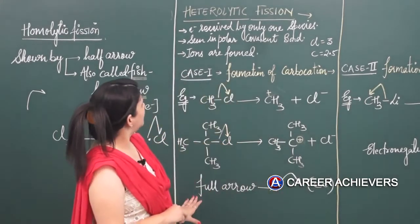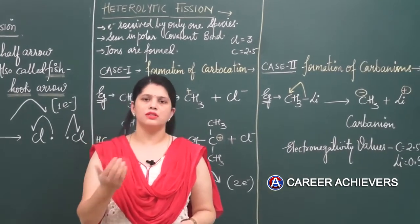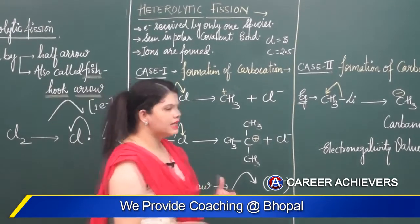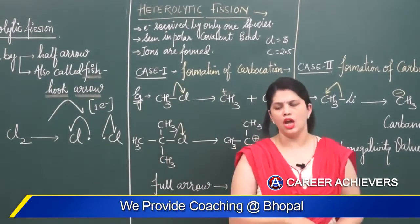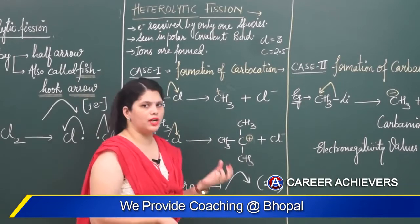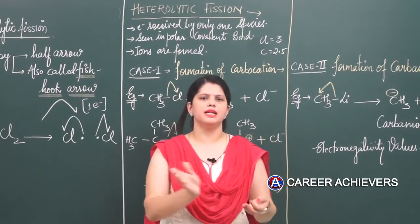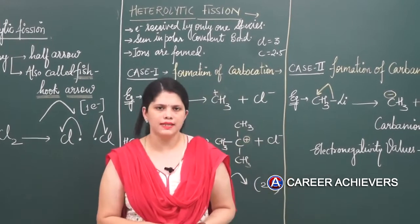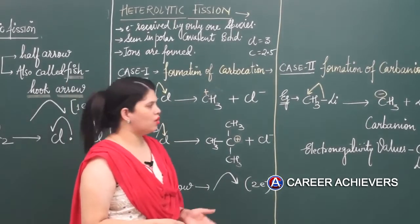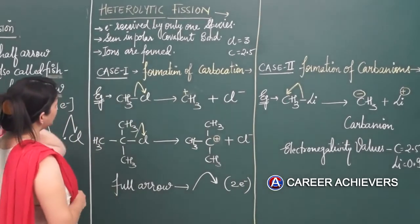Now let's discuss in detail about heterolytic fission. 'Hetero' means different — the opposite of 'homo.' So here fission occurs in a different way. This fission also has two conditions: if the covalent bond is polar, the polarity being toward carbon or away from carbon leads to two different situations — in one case a carbocation forms, and in the other case a carbanion forms.